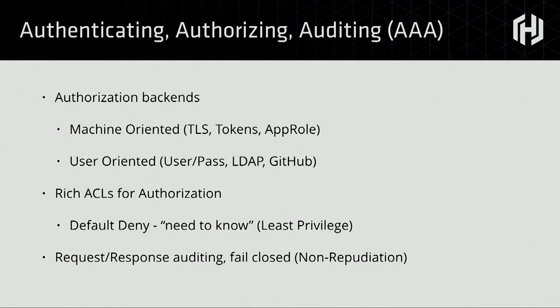The bread and butter of security is the three A's: authentication, authorization, and auditing. From an authentication perspective, there are really two ways we think about it — machines that are authenticating and humans. They have very different requirements, so there are different backends designed to support these different interactions. On the ACL side, it's a very rich authorization language with very fine-grained control. It's built around the least privilege default-deny model, so everything is on a need-to-know basis. And you can do full rich request-response auditing around everything.